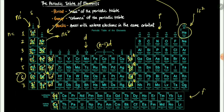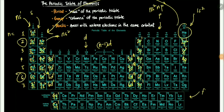For the p-block, the valence configuration is ns2 npx. Starting from the first p column: 2p1 through 6p1 in the first column, up to 2p6 through 7p6 in the last column. So group 13 elements have np1 and group 18 elements (except helium) have np6.